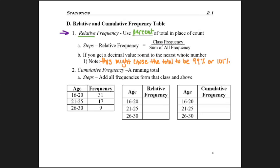And then a cumulative frequency is a running total, where you're kind of adding the frequencies of the classes above it, but you're about to see that performed.